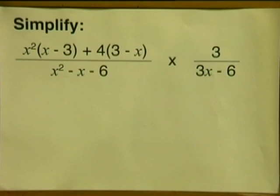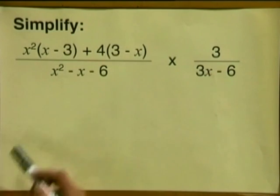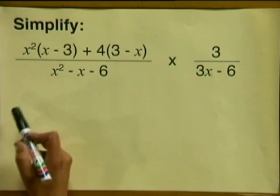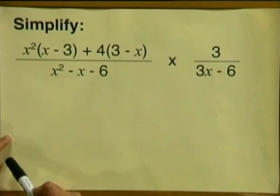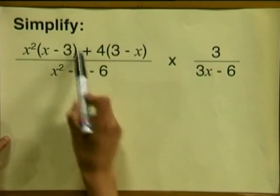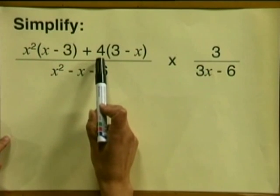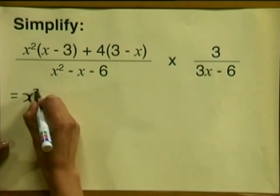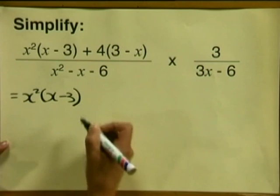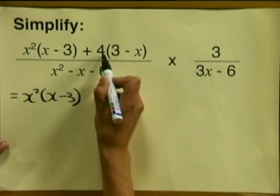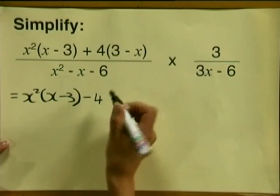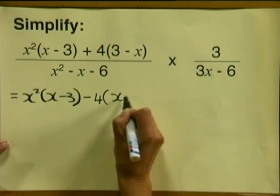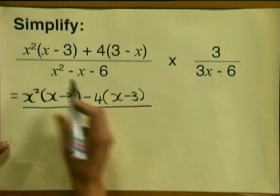Check with me and see if you simplified it correctly. Let's start with our numerator. Now notice we haven't got factors because we've got terms, and we need to be able to take out a common factor, but we don't have a common factor. We can create a common factor by changing the sign — we need to multiply our second term twice by minus 1. So we write the first term exactly the same: x squared multiplied by x minus 3. Positive 4 multiplied by minus 1 gives us minus 4, and 3 minus x multiplied by minus 1 gives us x minus 3.